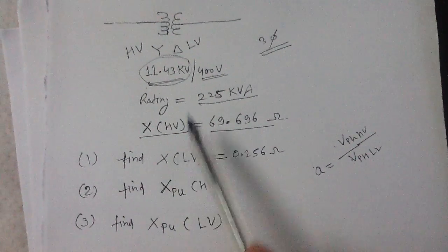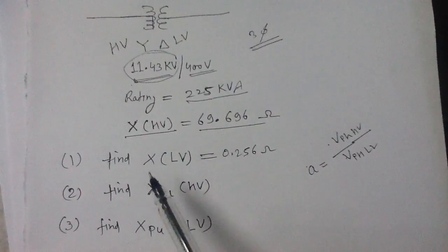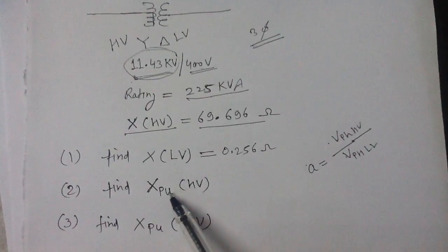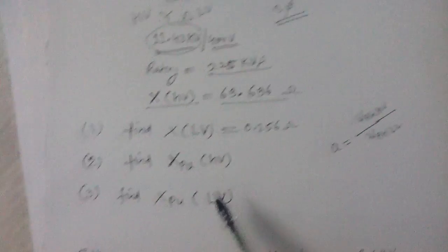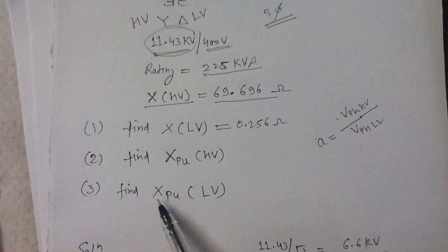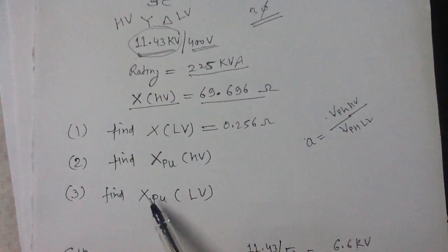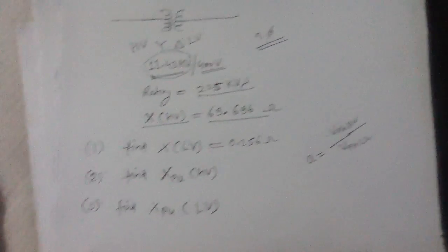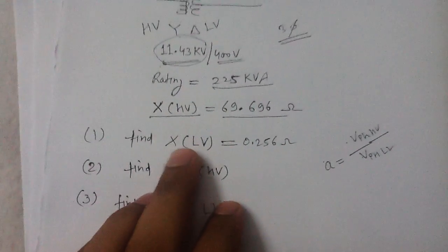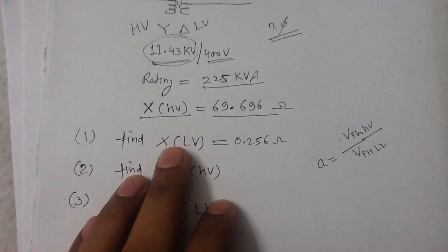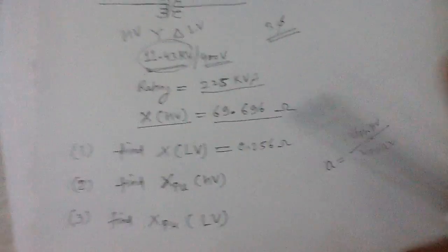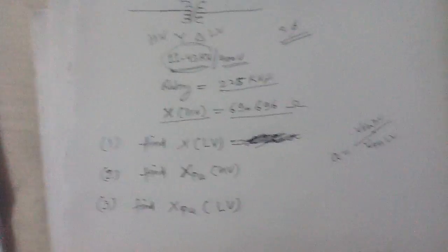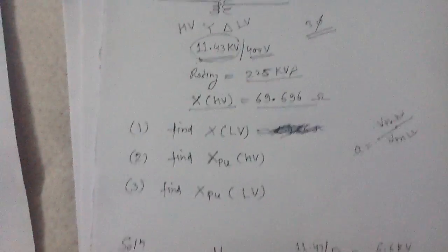The first question is to find the reactance of the three-phase transformer referred to the LV side. Then you have to find the reactance in per unit referred to the HV side, and again find the per unit reactance referred to the LV side of the transformer. The first question is the reactance of the transformer referred to the LV side.